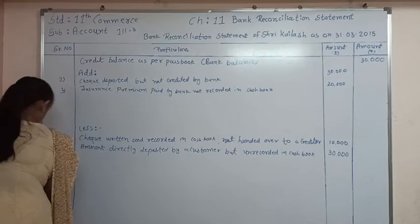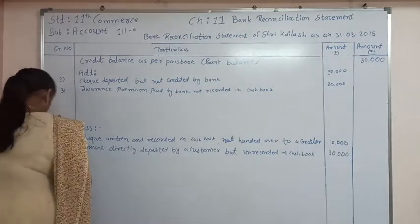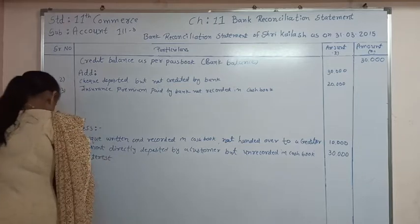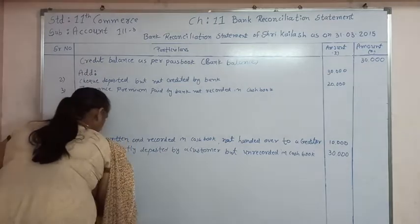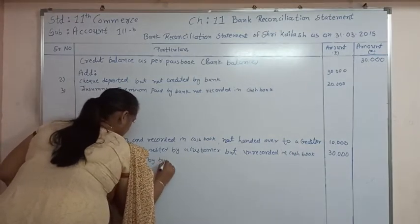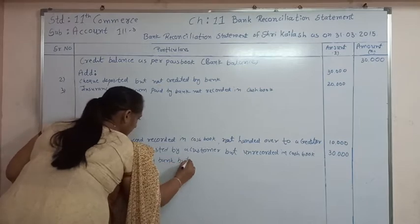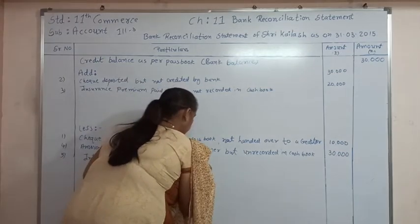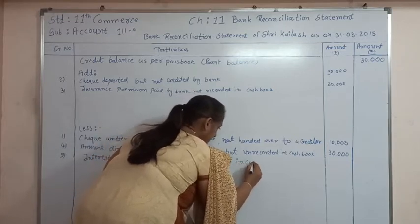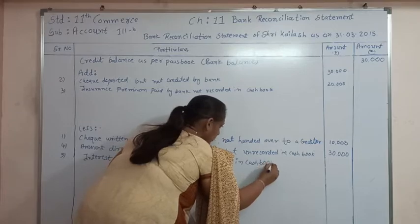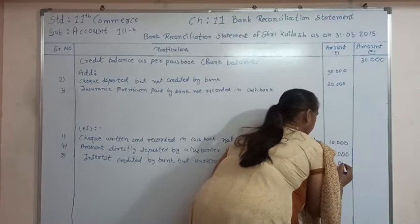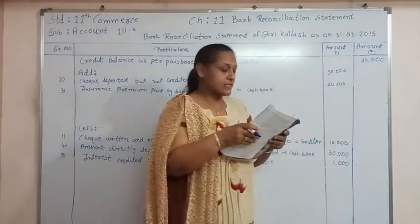Transaction number 5: interest credited by bank but unrecorded in the cashbook. The amount is rupees 1,000.